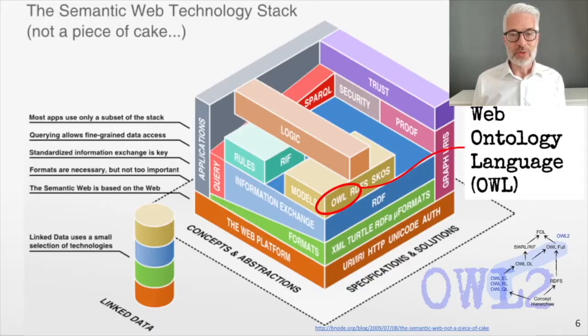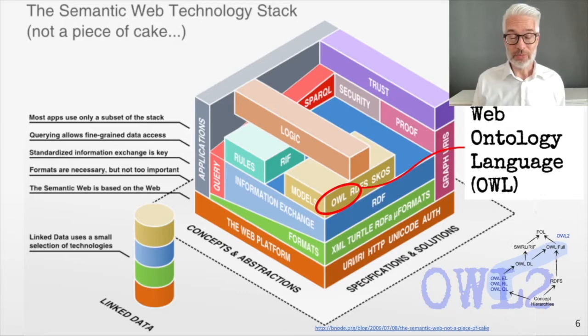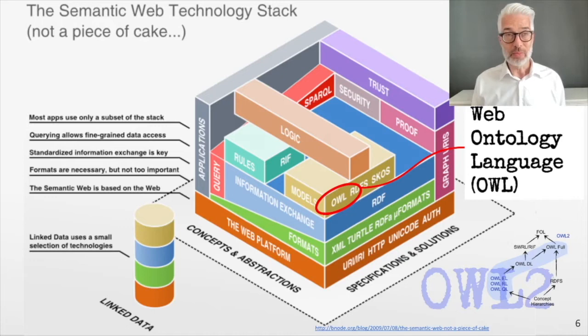What you have already heard of is RDFS as a modeling language for RDF and for the Semantic Web Technology Stack. However, RDFS was not very powerful in terms of semantic expressivity. We could do class hierarchies, property hierarchies, and define property constraints — domain and range restrictions for properties — but that's it more or less. If we want to express more semantics, we need a more powerful language that includes logic. And there we come to the Web Ontology Language.